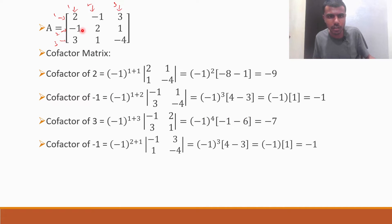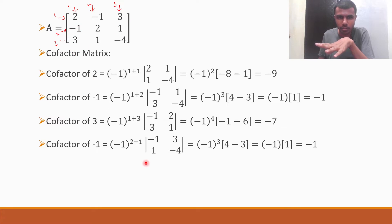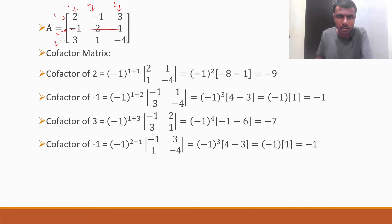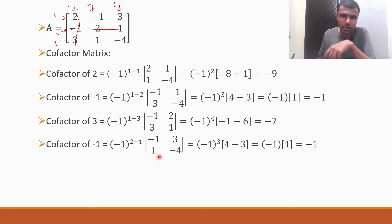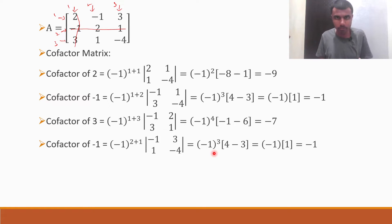Now we need to find the cofactor of minus 1 at position second row, first column — so 2,1. Minus 1 to the power 2 plus 1 into: strike off the row and column in which this is there, leaving minus 1, 3, 1, minus 4. So minus 1 into minus 4 is plus 4, minus 1 threes are 3. Minus 1 to the power 3 is minus 1, and 4 minus 3 is 1, so I get minus 1.